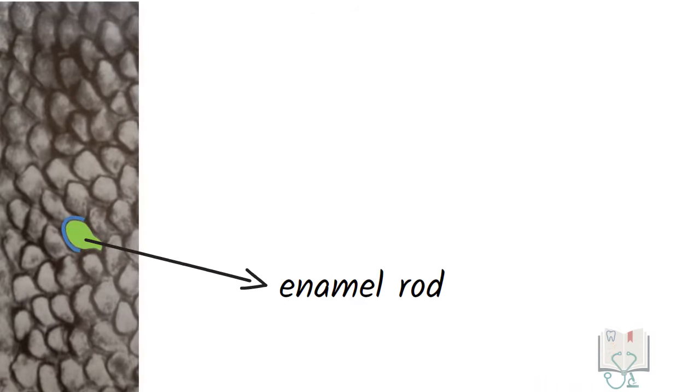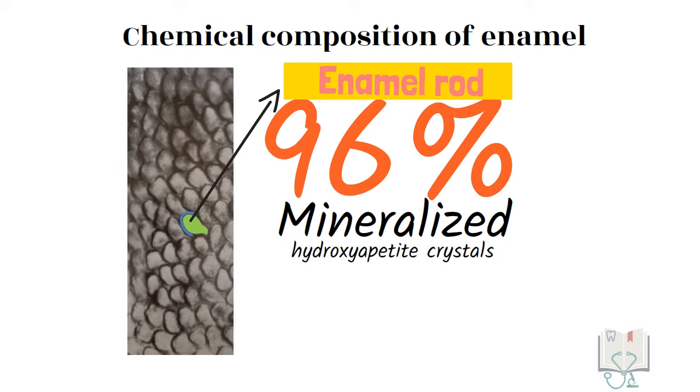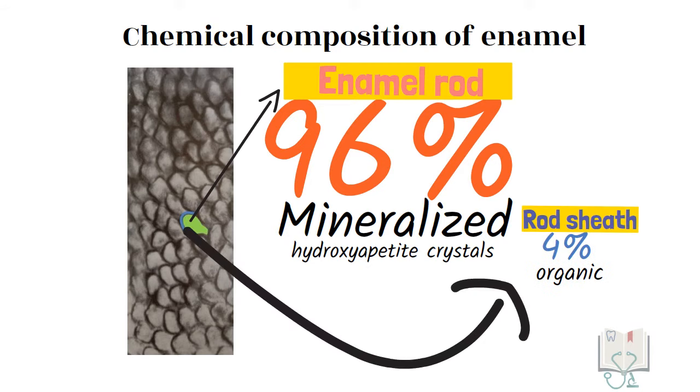Each enamel rod is separated from other by a rod sheath. If we revisit the chemical composition of enamel, the 96% inorganic matter formed of hydroxyapatite crystals is present in the enamel rods. Whereas the 4% of organic matter is seen in this rod sheath.